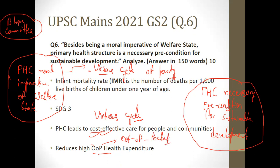That's why there is the National Health Policy 2017. According to NHP 2017, if the government is spending 100 rupees on healthcare, it should spend two-thirds or more — that means 67 or more rupees — on primary care, followed by secondary and tertiary care. This proves that primary health care is a moral imperative of a welfare state, as it helps reduce high out-of-pocket health expenditure.